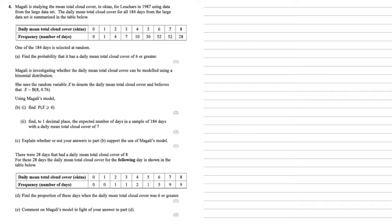Magali is studying the mean total cloud cover in Octas for Lucas in 1987 using data from the large dataset. The daily mean total cloud cover for all 184 days from the large dataset is summarised in the table below. One of the 184 days is selected at random. We need to find the probability that it has a daily mean total cloud cover of 6 or greater.